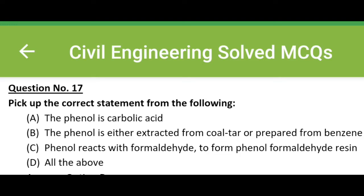Hello friends, welcome to Civil Engineering Exam. Today we are going to see MCQs related with building materials. Pick up the correct statement from the following: Option A, the phenol is carbolic acid. Option B, the phenol is either extracted from coal tar or prepared from benzene. Option C, phenol reacts with formaldehyde to form phenol formaldehyde resin. Option D, all of the above.